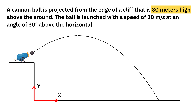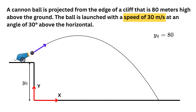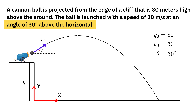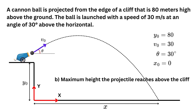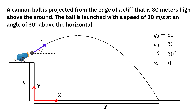We are told the height of the cliff is 80 meters, which means y₀, the initial y-value of the projectile, is 80 meters. The magnitude of the initial velocity is 30 meters per second, denoted v₀. The angle of launch is 30 degrees above the horizontal, denoted theta. The horizontal distance the projectile travels is labeled x, with initial position x₀ equal to 0. The maximum height the projectile reaches will be the highest vertical point during its motion, labeled y_max.